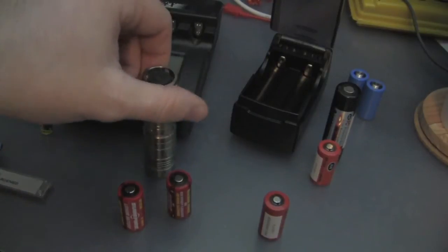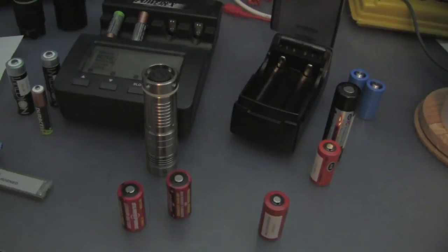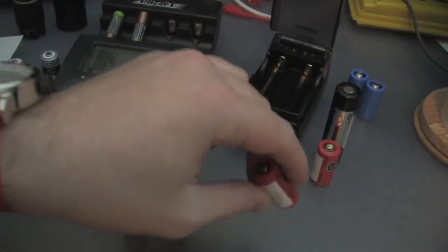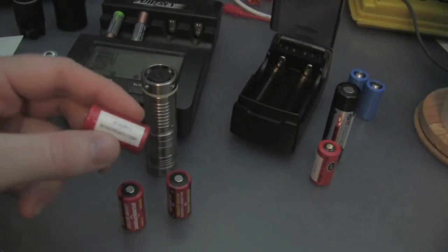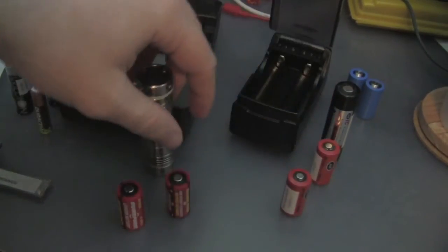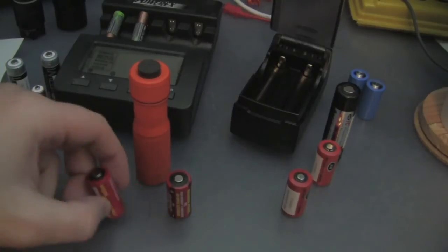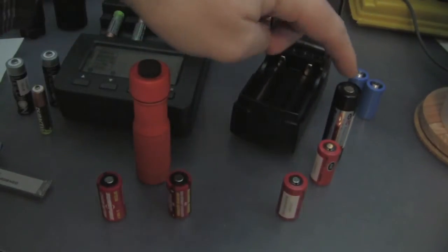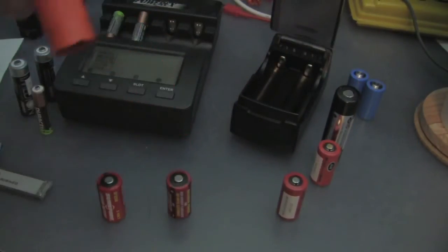Now, this light, this is the Sunwayman V10R, and it is rated for up to 4.2 volts. It's a single cell light. So, I could, in theory, safely use one of these rechargeable lithium batteries in it. This HDS Clicky is perfectly suited for lithium primaries, rechargeable lithium batteries. You can get an extension tube and run the 18650. It's quite a versatile light.